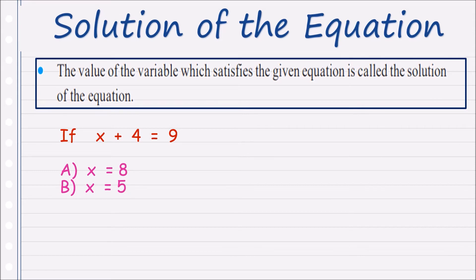Option B: x equals to 5. We substitute this value in the equation, replacing x by 5. So 5 plus 4 is 9. This value makes both sides equal, meaning it satisfies the given equation. Hence, x equals to 5 is the solution of this equation.